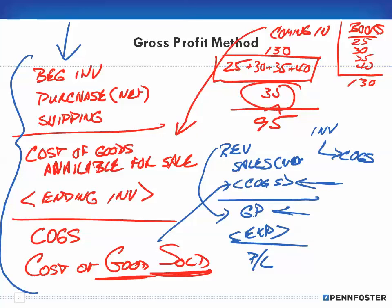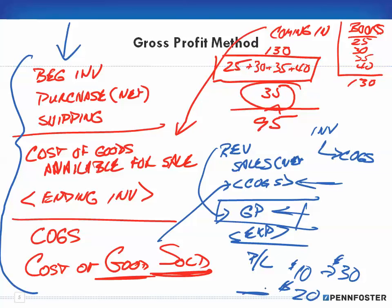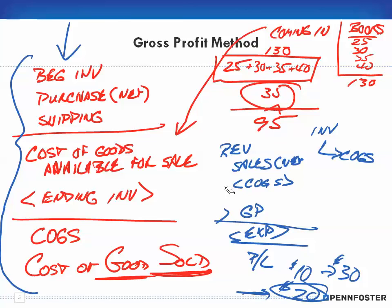Remember, gross profit is not your bottom line. We look at gross profit simply to know how much money we make on the sale of an item before taking out all the rest of our expenses — like advertising, utility expenses, and so on. For example, if I have an item that costs ten dollars and I sell it for thirty, I have a twenty-dollar spread. That's not profit — yes, it's profit on that item when sold, but I still have to take out the other expenses from that twenty dollars.